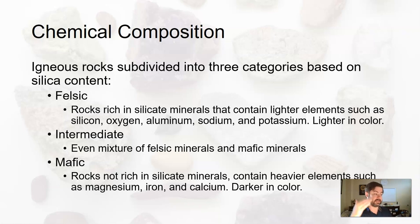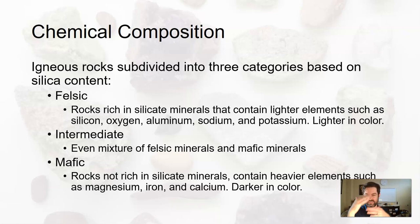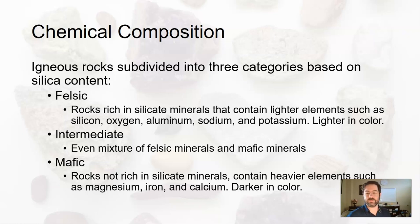In between felsic and mafic, they're just called intermediate igneous rocks — kind of in between. An intermediate level of silicate minerals, and they're also intermediate in color: not light, not dark, kind of grayish. So if you're looking at a grayish igneous rock, it has an intermediate chemical composition — a medium amount of silicate minerals.